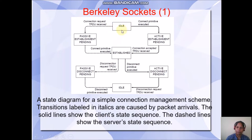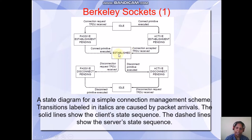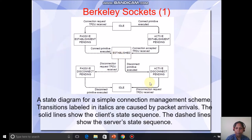Initially, both the client and server will be in the idle state. Once a connect primitive — that is, the connect function — is executed, and once the server accepts the request and establishes a connection, the state is moved to established. Once a disconnect request is executed, it is moved to active disconnect pending. Finally, when the connection is disconnected, the client and server are moved back to idle state.